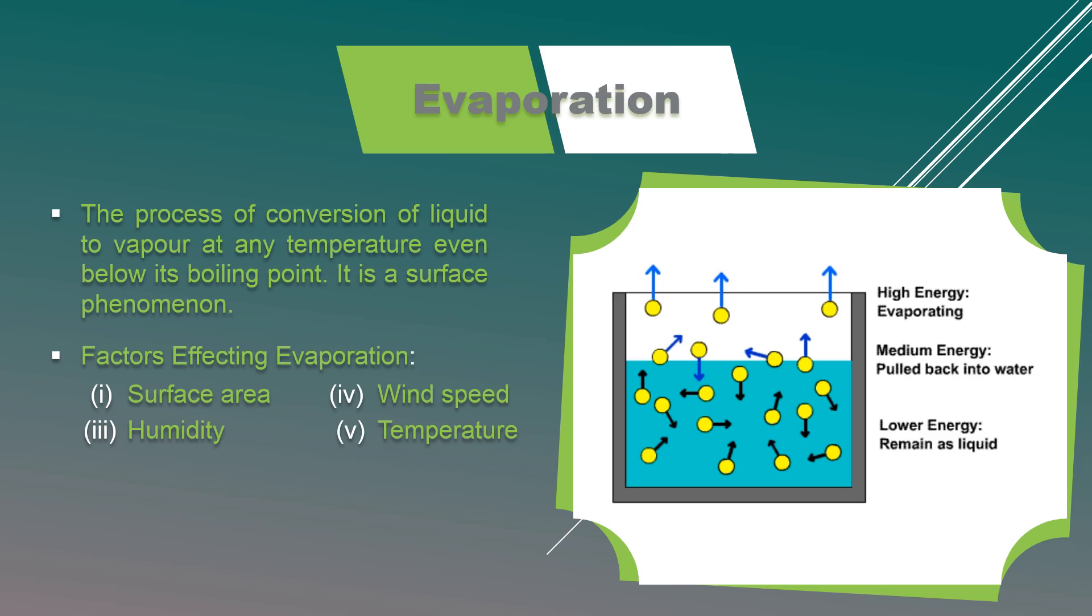Liquids need latent heat for evaporation and they take this heat from things in their surroundings. The things in surrounding lose heat and they cool down. For example, sweating, coolers, and earthen pots are all examples of cooling effects of evaporation.